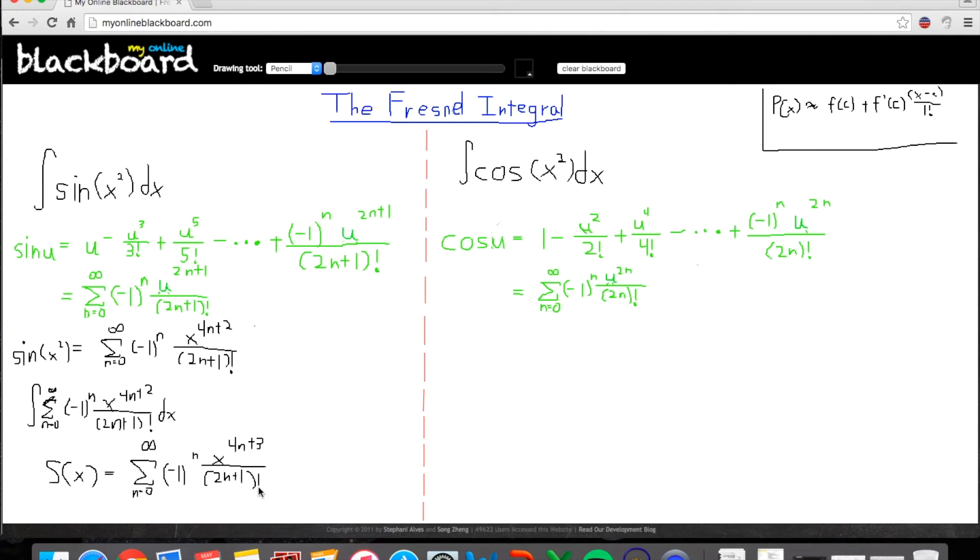And, this process is very, very similar to our cosine x squared, and so, we'll apply the same process here. So, we want to take the integral, or first we want to substitute x squared for our cosine u term, so, what we get is that we have cosine x squared is now equal to, and we substitute, just like we did before, our n equals 0 to infinity. It's still an alternating series, so, we have negative 1 to the n, and then we have u now to the 4n, all over 2n factorial.